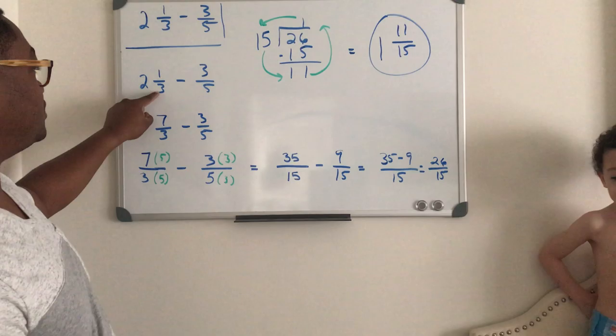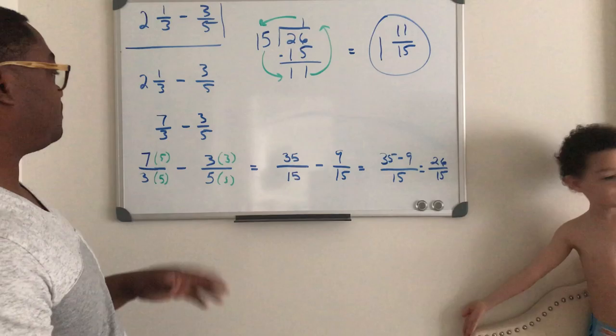So 2 times 3 is 6, 6 plus 1 is 7, so now we have 7. And you just keep the denominator, that's how you do it.